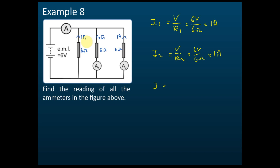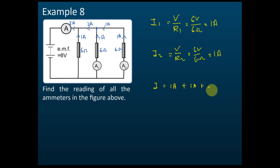This is 1 ampere, this is also 1 ampere. At this junction, 1 ampere joins and becomes 2 amperes. Then this 2 amperes and the other 1 ampere join together and become 3 amperes at this point. So the reading of ammeter A is 3 amperes, which equals 1 ampere plus 1 ampere plus 1 ampere.